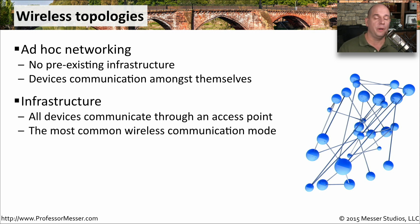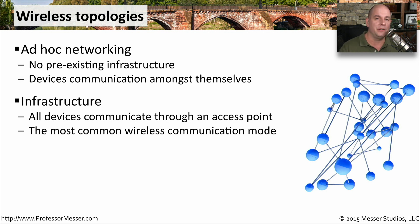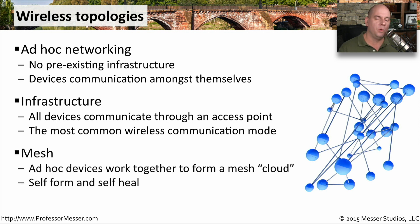If you're communicating through an access point — which is probably the most common way to connect to a wireless network — then you're using infrastructure mode. All devices on the network connect to the access point, and they communicate with each other by going through it. There is no direct connection between devices; all communication passes through that central access point.